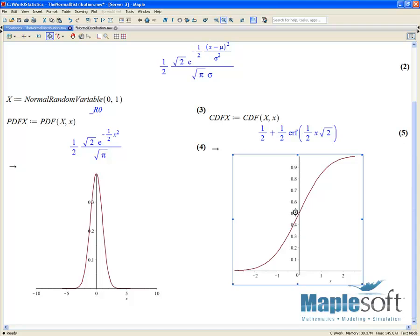So we would just find 0, read up to 0.5, and that would mean that we have a 0.5 probability of being less than or equal to 0.